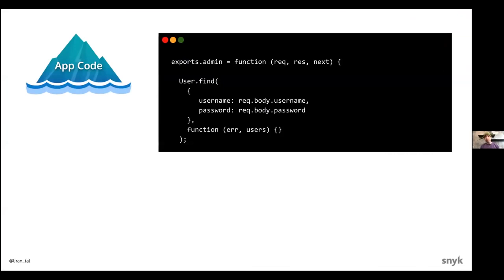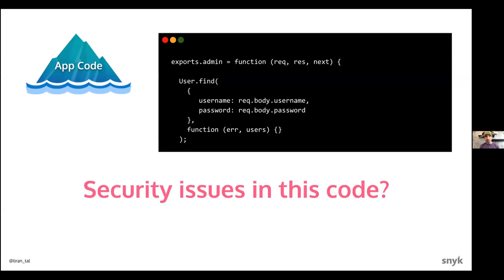At the very core of the applications we're building, there lies our own custom application code. This is the top of the iceberg, above the water — the code that we as developers can very clearly see day to day. It's what our colleagues write, what's in our IDE, and what is on our focus and state of mind all the time. Looking at these code snippets, can you find a security issue? Are you aware of the security issues in your code? As you look at this Express middleware, common in Node.js web applications, there is a security issue here — but we'll get back to that later.